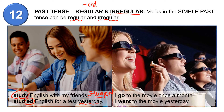The next example: 'I go to the movie once a month.' Again, once a month is a routine, something we do on a regular basis, so we use simple present. But 'yesterday I went to the movie.' 'Go' is irregular — 'go' is present, 'went' is the past.